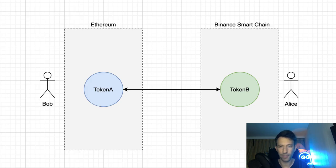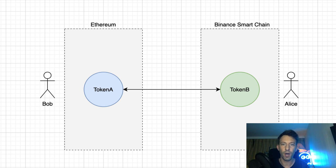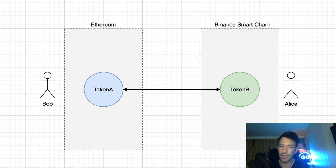So let's see how atomic swaps work. Let's say we have two blockchains: Ethereum and the Binance Smart Chain. Just to be clear, Binance is originally a centralized exchange but they also launched a blockchain called Binance Smart Chain. Bob has an ERC20 token on Ethereum called token A. Alice has an ERC20 token on Binance Smart Chain called token B. They want to exchange their tokens with an atomic swap.